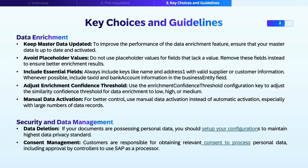You should always include key attributes like name and address for supplier or customer information to improve the results further. To alter the behavior of data enrichment, also use enrichment confidence threshold configuration to adjust the similarity confidence thresholds for data enrichment to low, high, or medium based upon your use case.